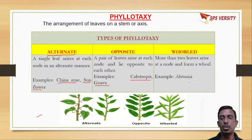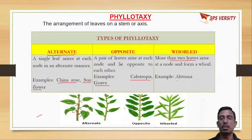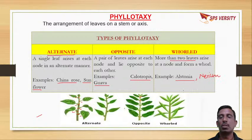There is also whorled or circular phyllotaxi, where more than two leaves arise from each node.